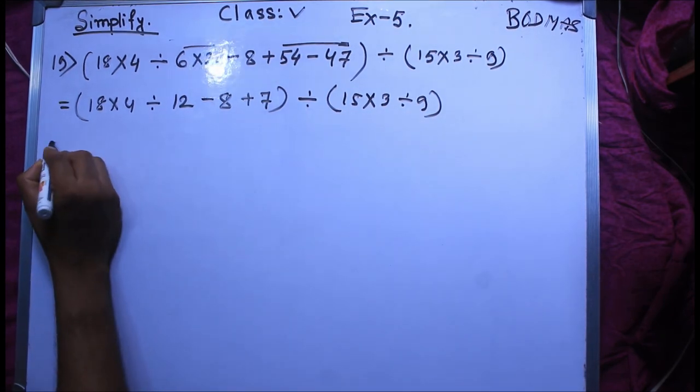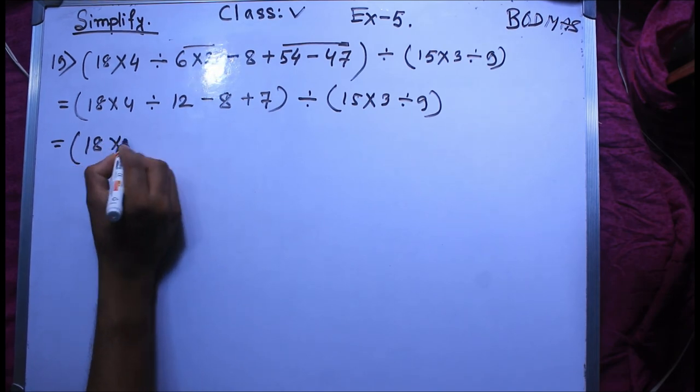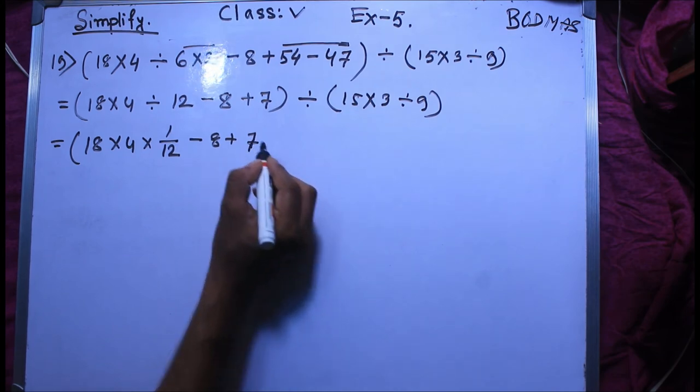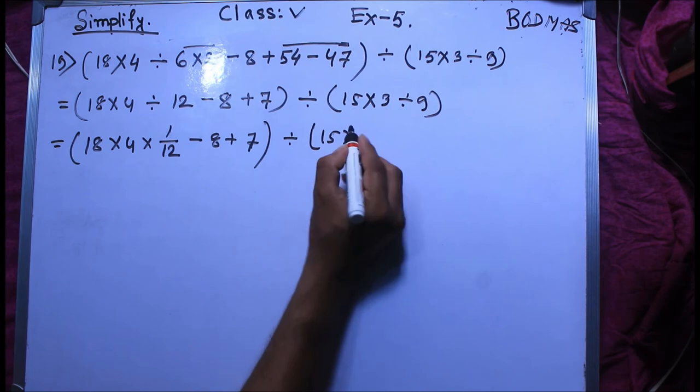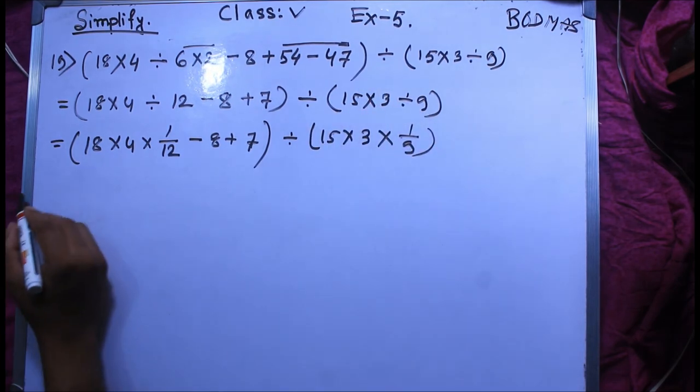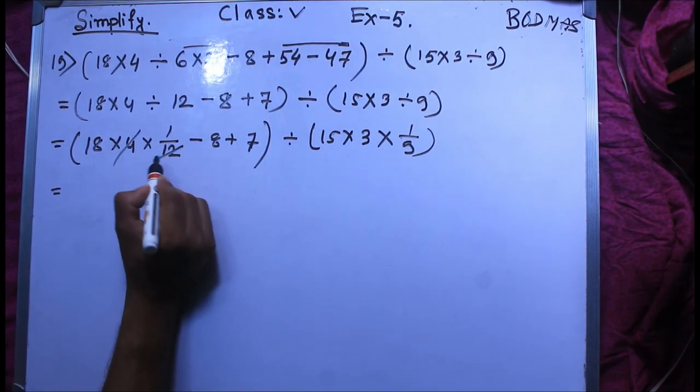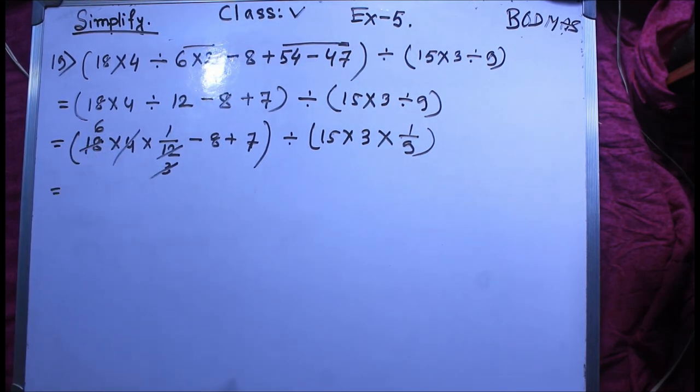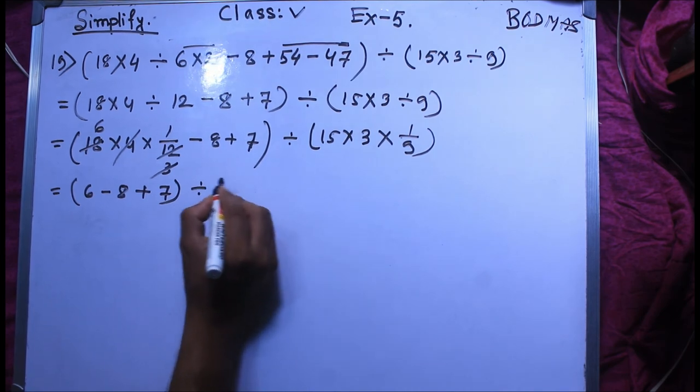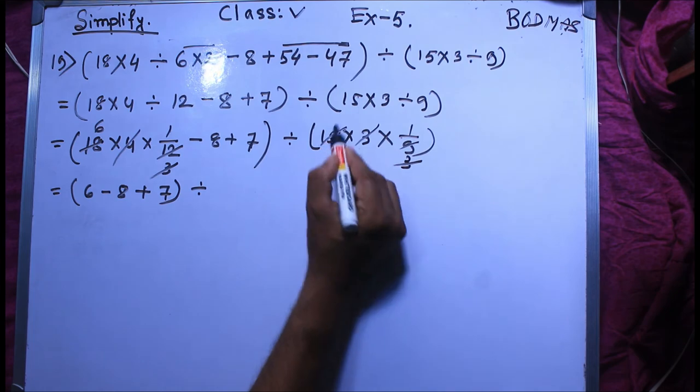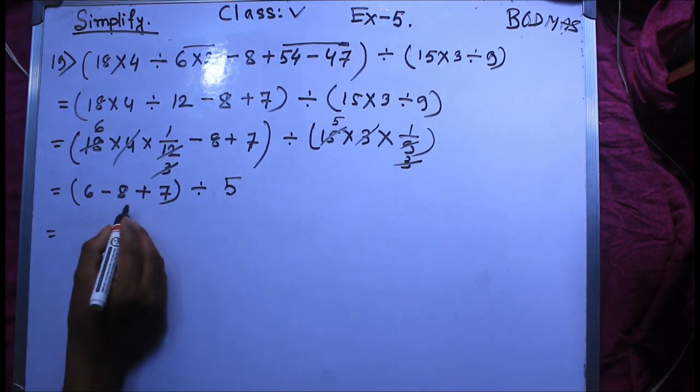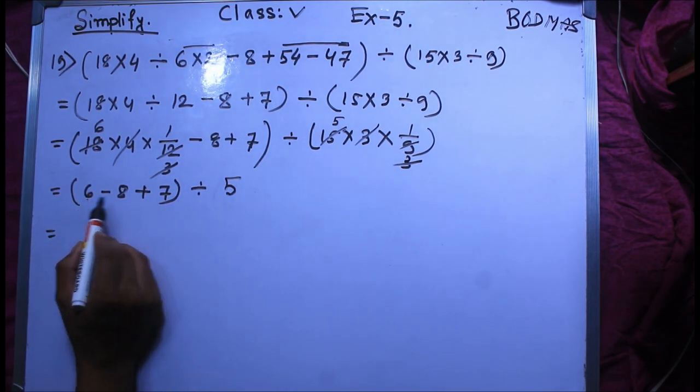18 into 4, this is 72, divided by 12 minus 8 plus 7. Divide by 15 into 3, which is 45, divided by 9. 6 divided by 5. 6 minus 8 plus 7 divide by 5.